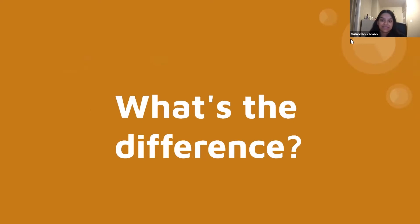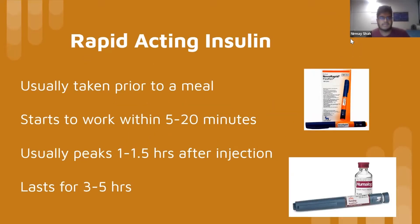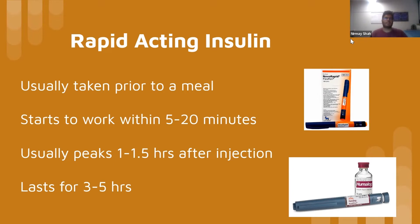Rapid acting insulin is usually taken prior to a meal — three times a day, before breakfast, before lunch, and before dinner. It starts to work within five to twenty minutes of injection, and the peak effect is usually after an hour or an hour and a half. However, different insulin types can range from 30 minutes up to two hours after injection.